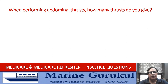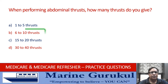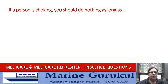When performing abdominal thrusts, how many thrusts do you give? 1 to 5; 6 to 10 thrusts; 15 to 20 thrusts; or 30 to 40 thrusts. When performing abdominal thrusts you give 6 to 10 thrusts, so the answer is B.